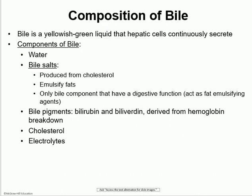Next on the list is to talk about bile. Bile is a yellowish-green liquid that is made by hepatocytes. Bile is made by the hepatic cells, but it is stored and concentrated in the gallbladder. It's made mainly of water, and you also have bile salts, which are made out of cholesterol. Those bile salts are very important in order for the body to digest and absorb fat, together with the fat-soluble vitamins.